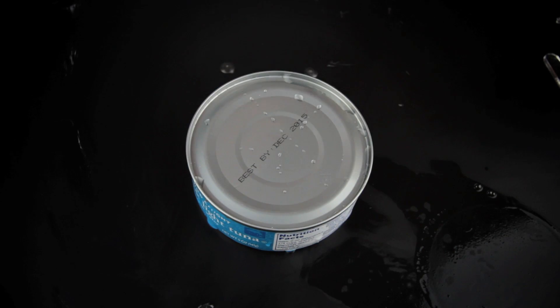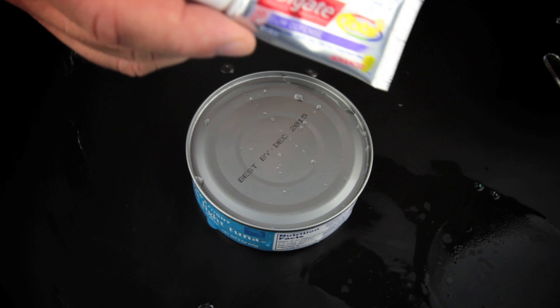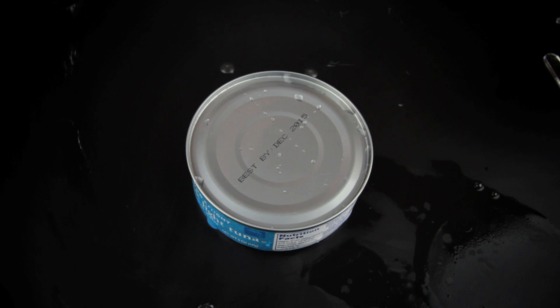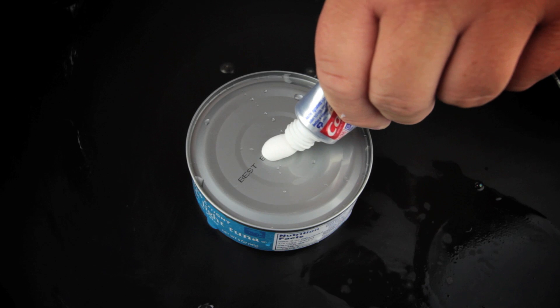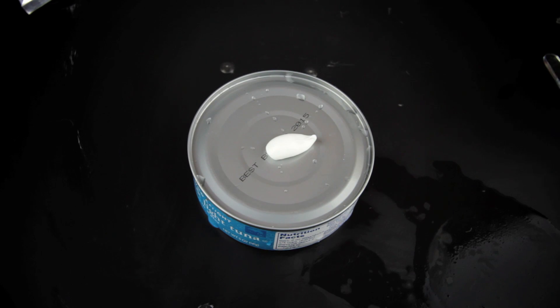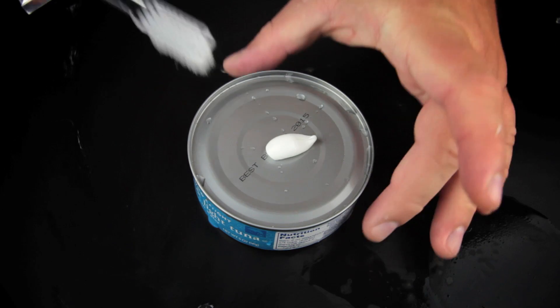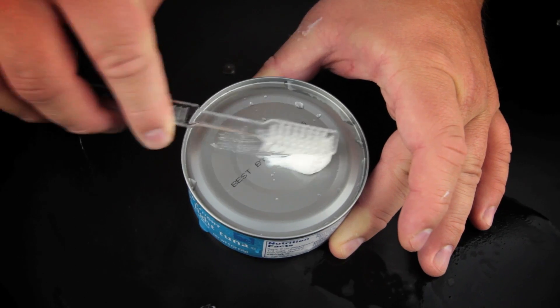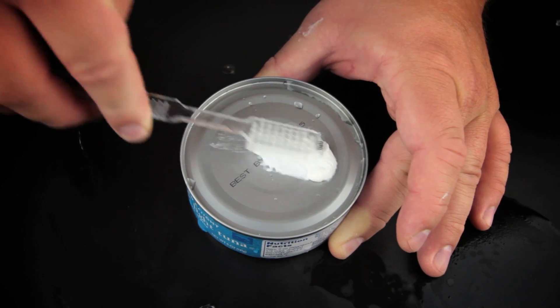All right. For our final step, we want to make sure that this tuna can's teeth are properly cleaned. Just a little bit of Colgate. Don't want to get any cavities. Make sure to get the corners.